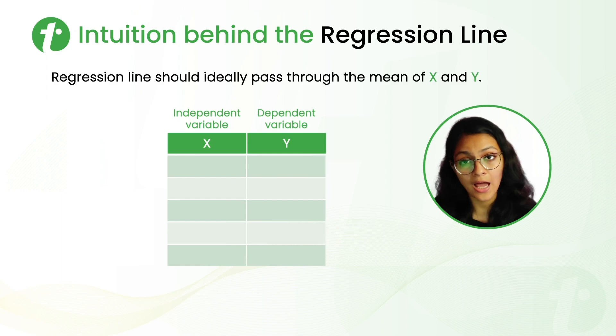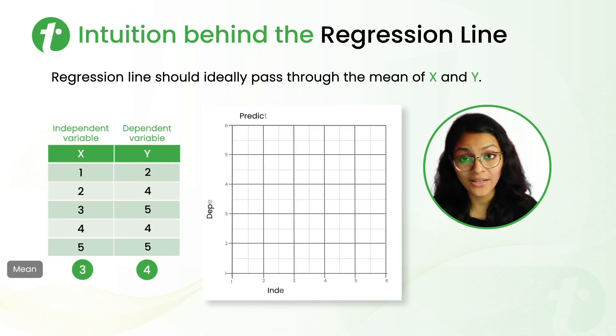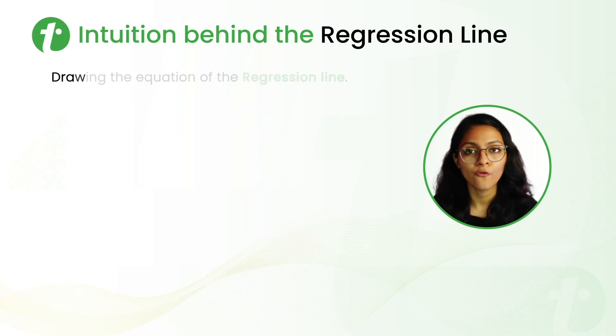Now, for the mean value of X, we have to do 1 plus 2 plus 3 plus 4 plus 5 over 5, which is coming out 3. And similarly, the mean value of Y is coming out 4. So, the regression line that is represented by this pink dotted line here is passing through the mean point that is 3,4 in this case.